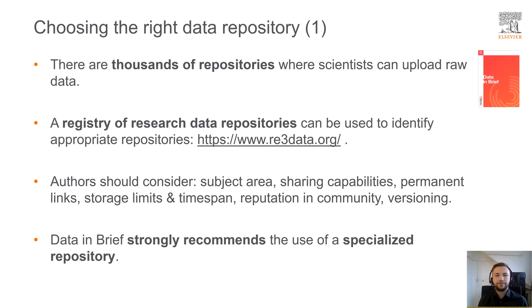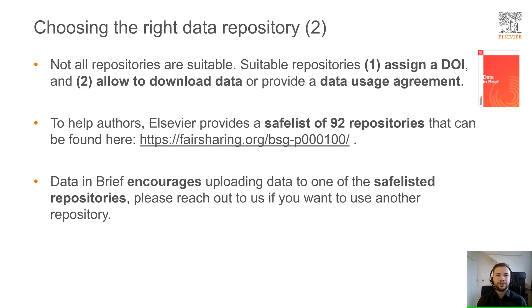You should then consider the subject area, sharing capabilities, permanent links, storage limits and time span, and the reputation in the community and versioning when choosing a repository from this list. If possible, Data & Brief strongly recommends authors to use a specialized repository. Not all repositories are suitable — a suitable repository distinguishes itself by assigning a DOI and allowing you to download the data or provide a data usage agreement. To help guide authors, we provide a safe list of 92 repositories, both generalist and specialist, that are frequently used in a wide range of fields. You can access this safe list by clicking on the provided URL. Although we encourage authors to use one of these safe-listed repositories, this list is not exhaustive and we offer guidelines to authors if they wish to choose a different repository.